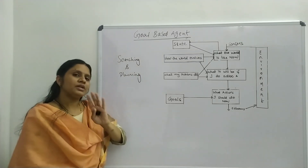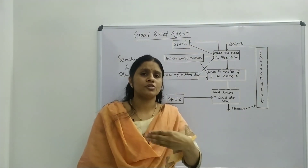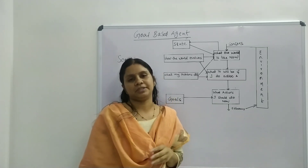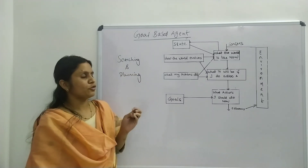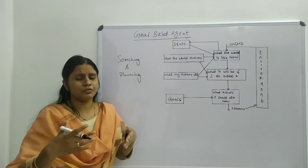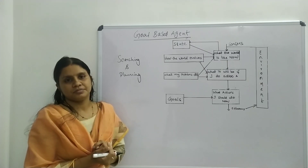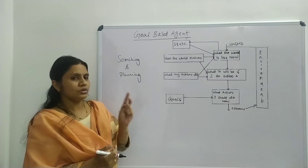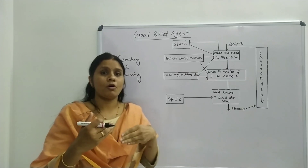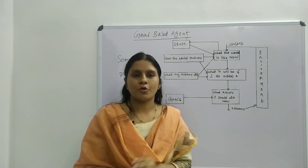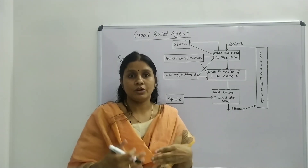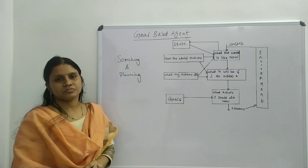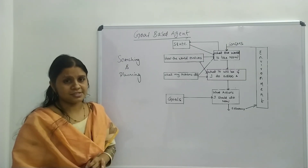In a goal based agent, there will be multiple set of possible alternatives and the agent will have to choose the best among them. In a simple reflex agent, the agent will respond quickly based upon the current situation with an automated response. But in a goal based agent, the agent will review many actions before selecting the best action.